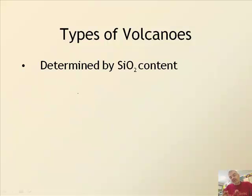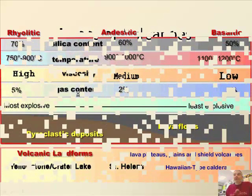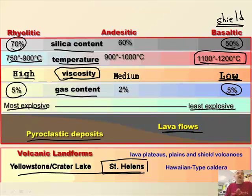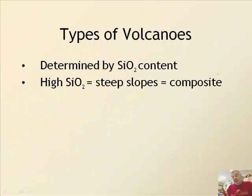The type of volcano is actually determined by the silicon dioxide content. Going back to the chart: the ones high in temperature, low in viscosity, and low in silicon dioxide content are shield volcanoes. The ones with high silicon dioxide content are composite volcanoes — the most explosive. The composite ones explode; the shield ones don't.